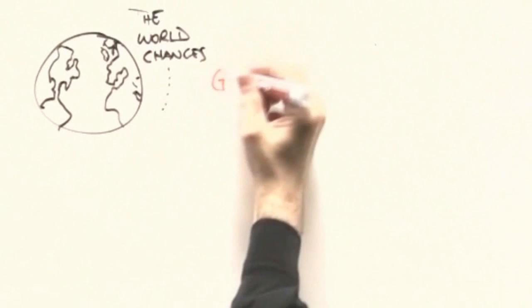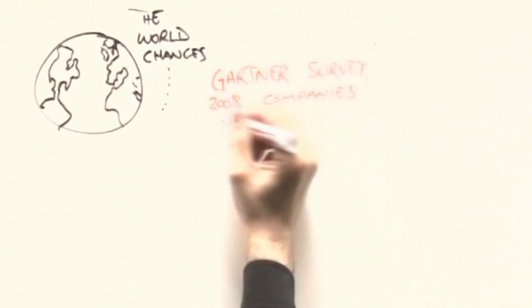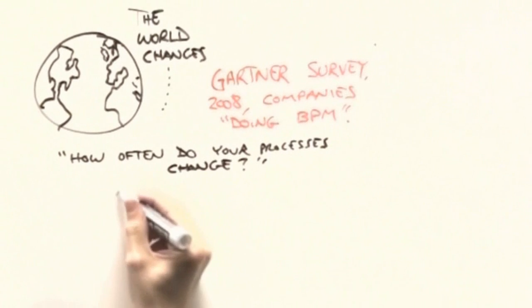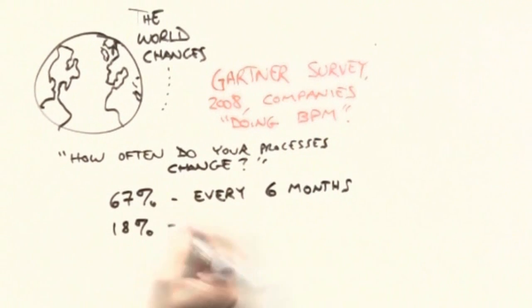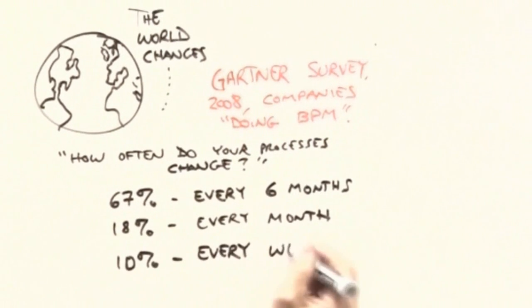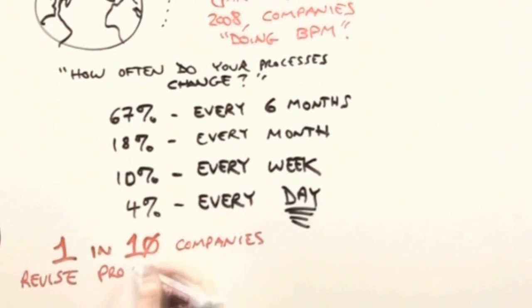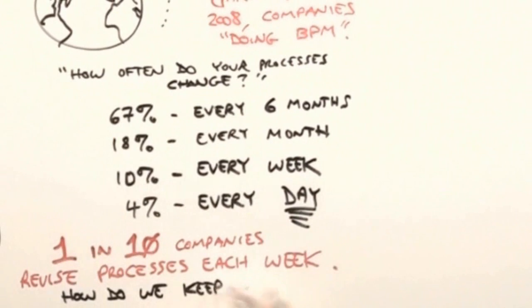The Gartner Group did a recent study of companies that do business process management. They asked how often business processes change. And two-thirds change every six months, 18% monthly, 10% weekly, 4% daily. One out of ten companies change workflows weekly. How do you keep up?